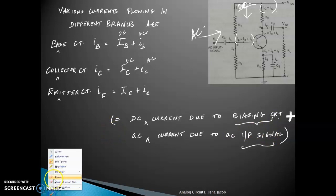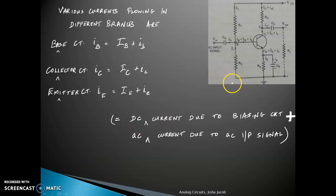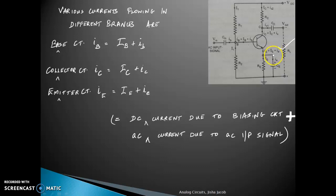This sums up all the components and aspects of the RC coupled amplifier. The load resistance R-L is external to the amplifier — this circuit will drive another circuit which has a certain load resistance, or it can be an actual load. I am sure the purpose of each part is now familiar. I will see you in the next video. Thank you.